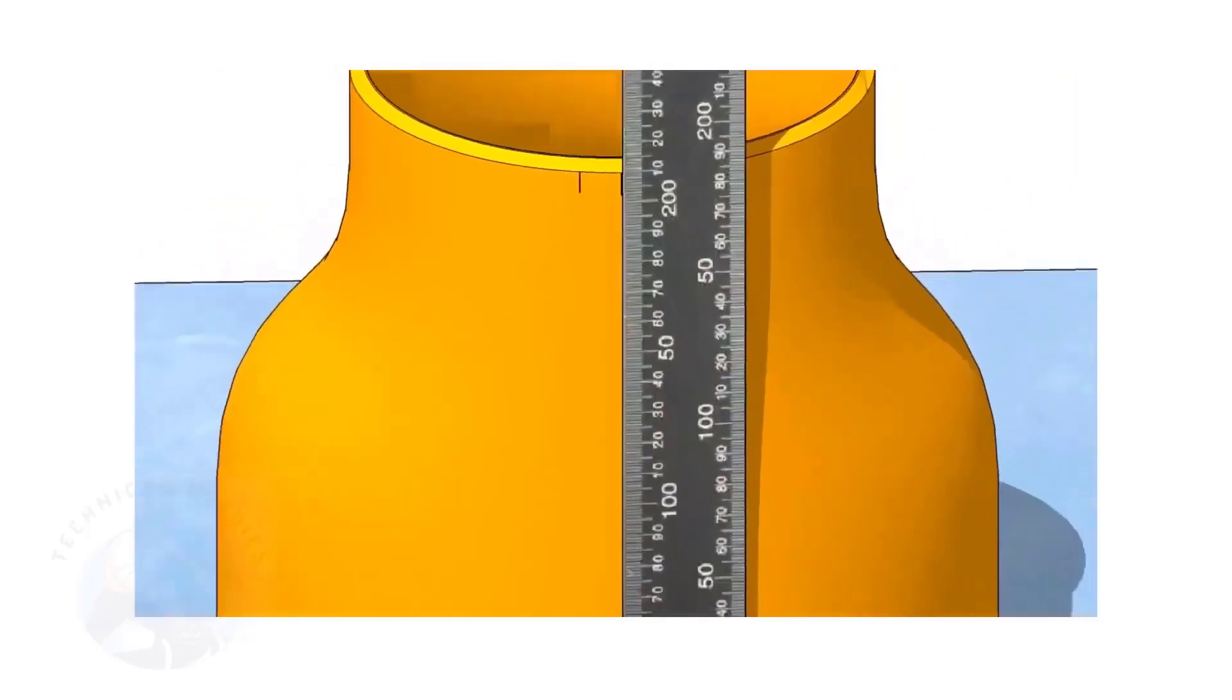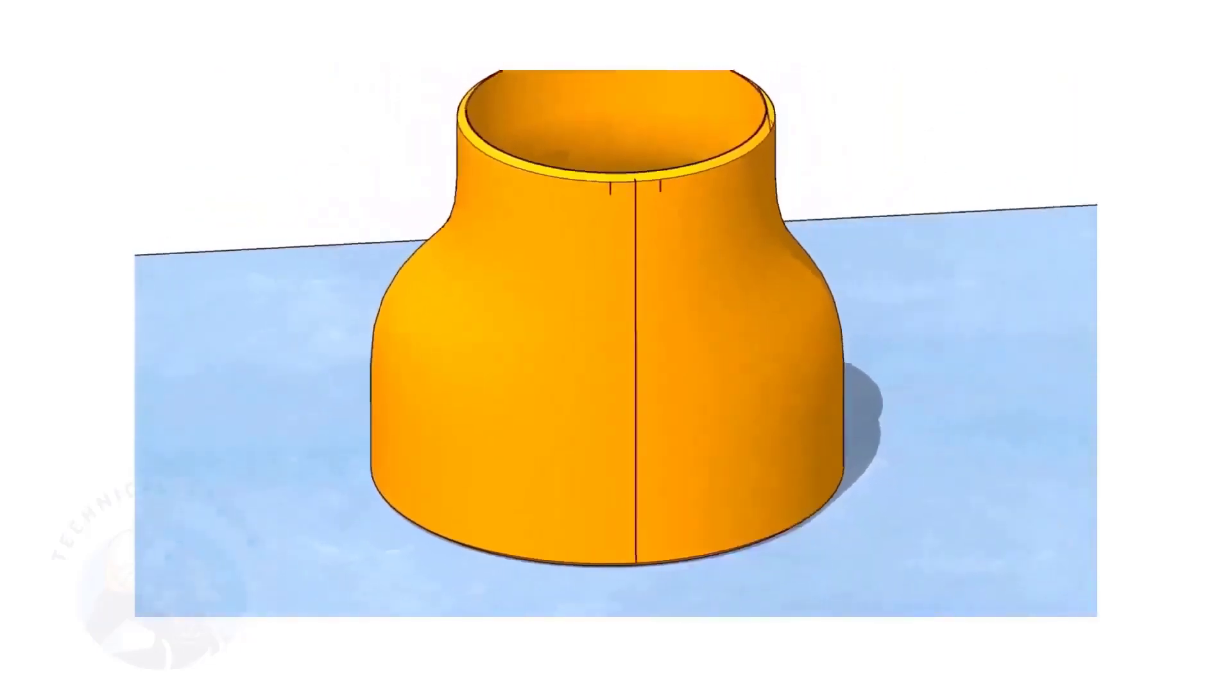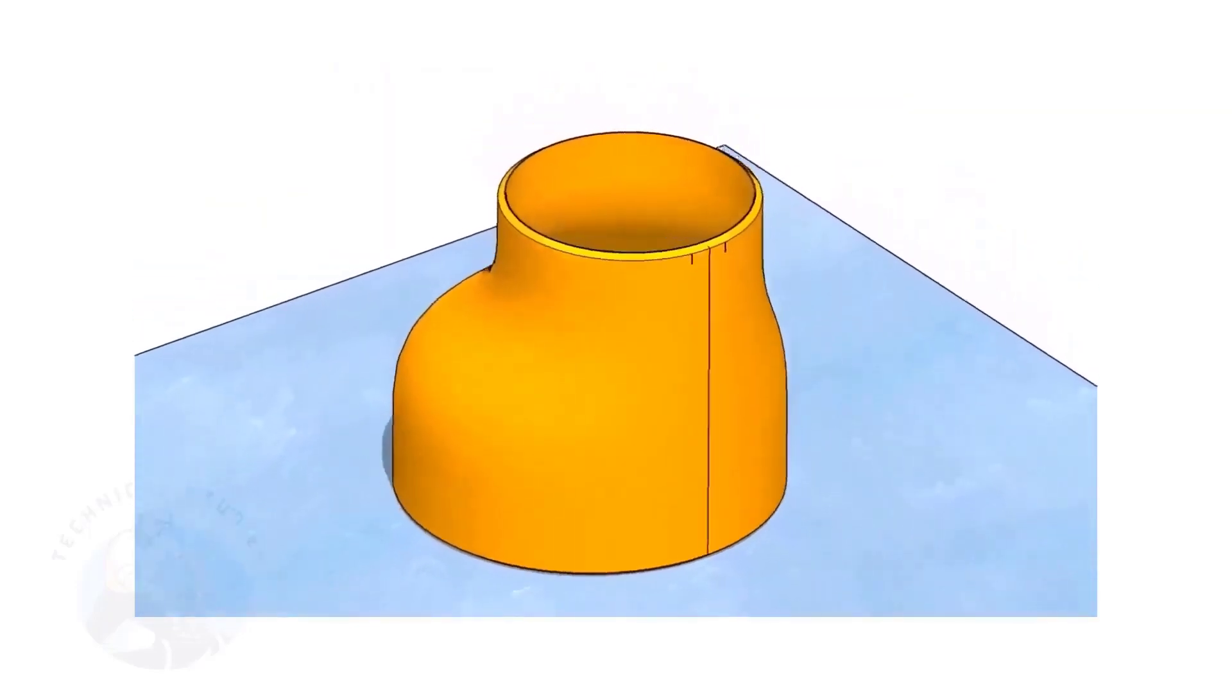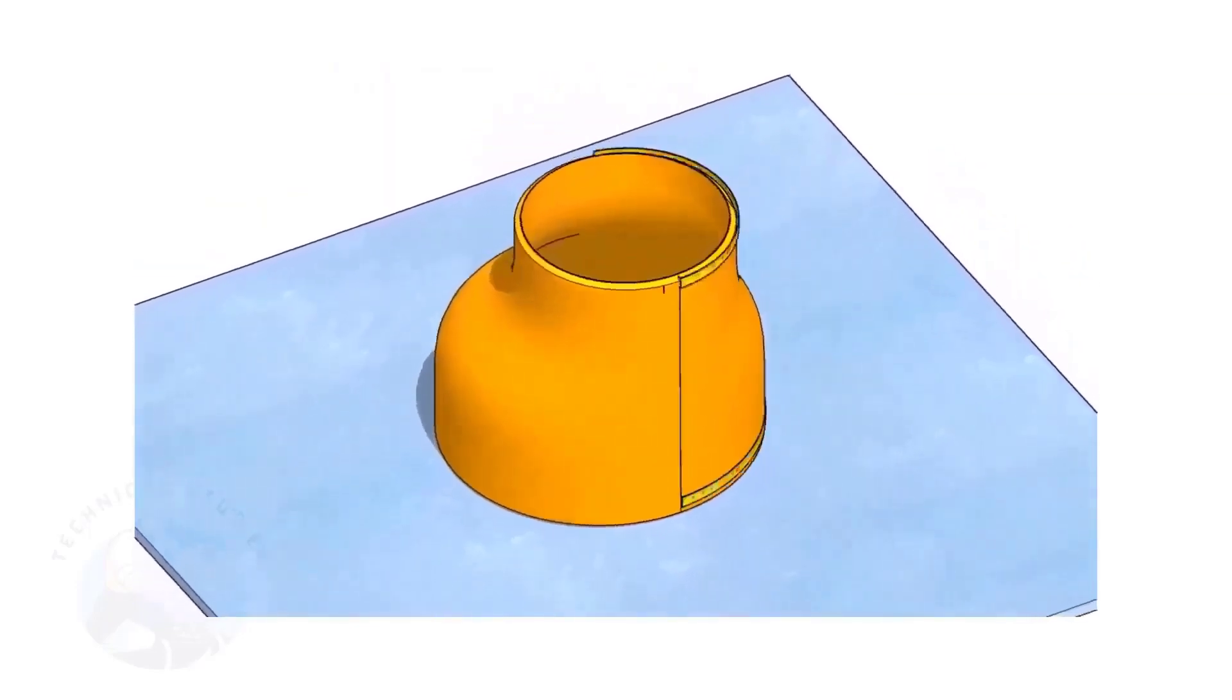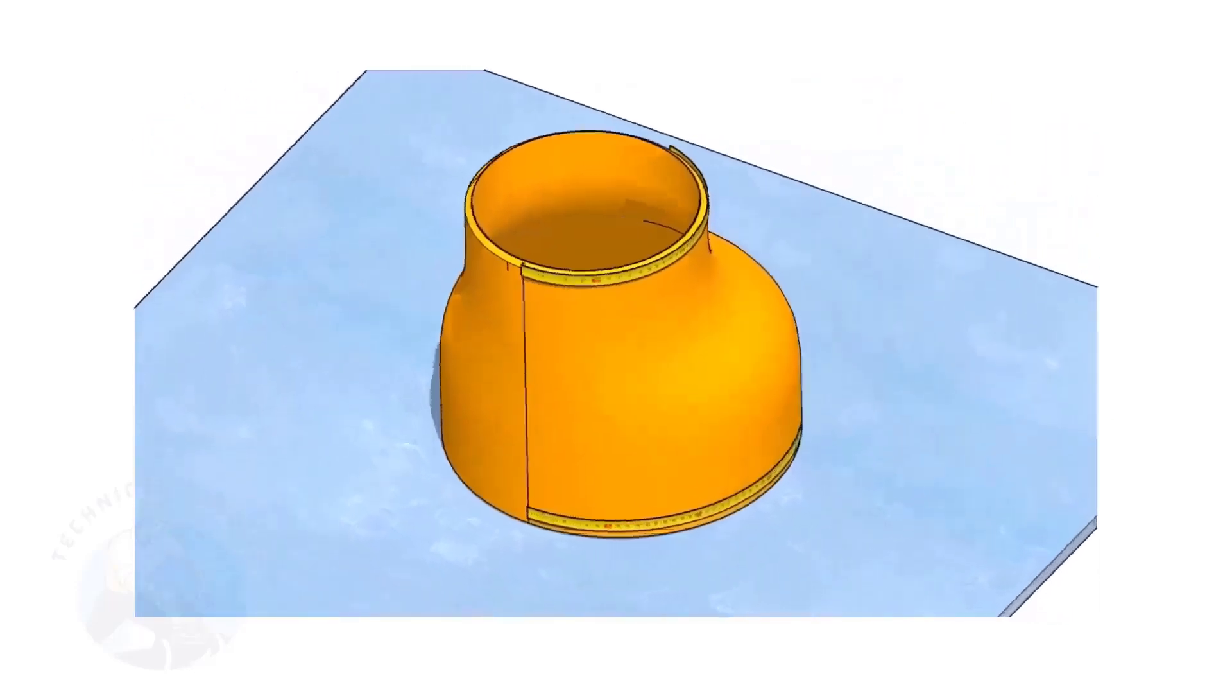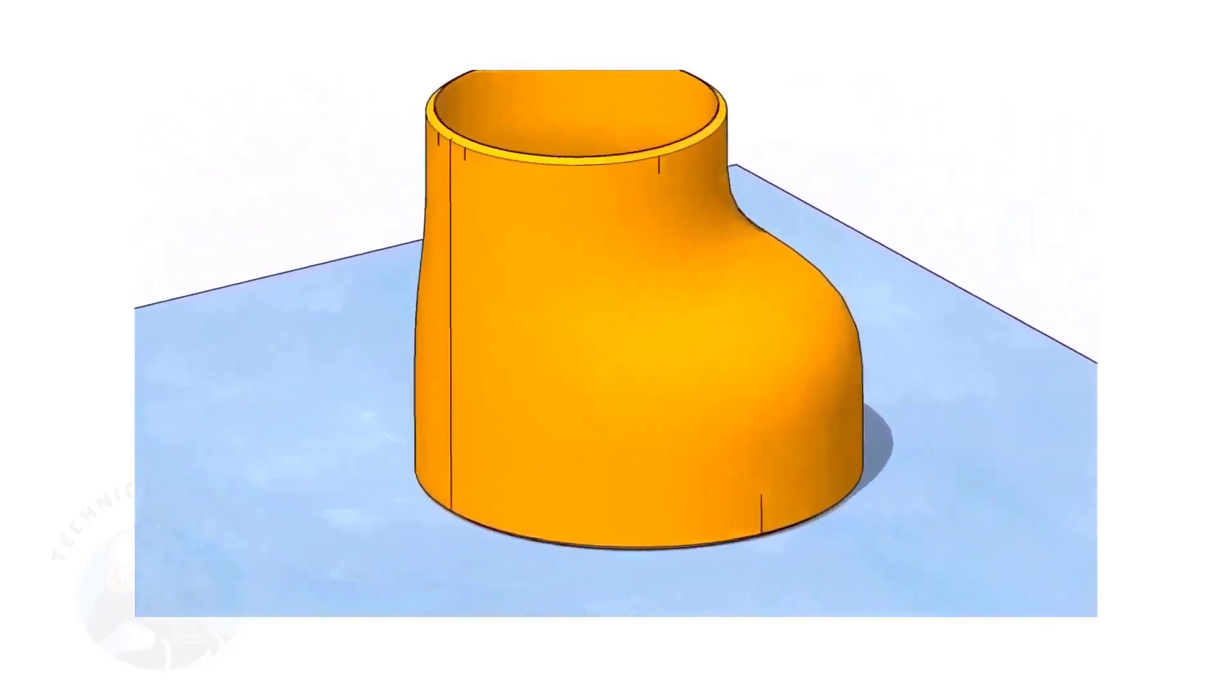In this video, I will show you the method of fitting an eccentric reducer to a pipe that is already fitted to a flange. But, this method is applicable for all the fittings. Remember, the sequence of the fit up is more important.